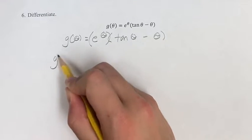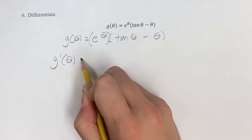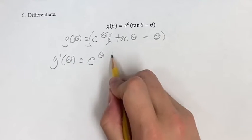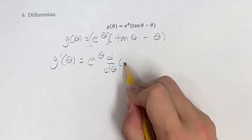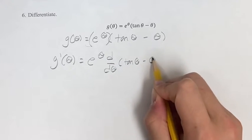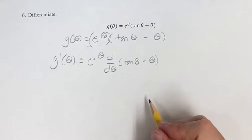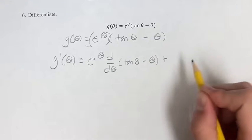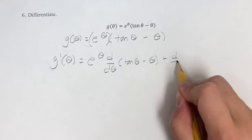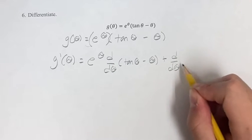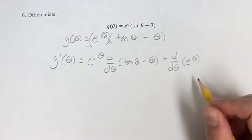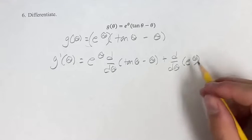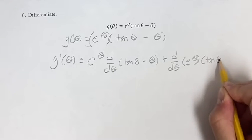So the derivative g prime of theta is going to be the first thing e to the theta times the derivative of the second which is tangent theta minus theta, and then we are going to add that to the derivative of the first e to the theta times the second tangent theta minus theta.